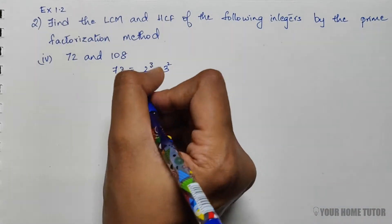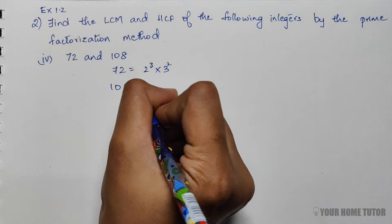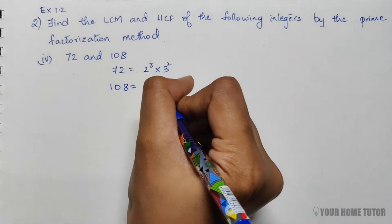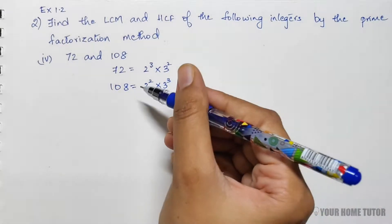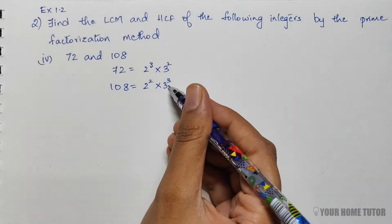For 108, the prime factors are 2² × 3³. That's 4 × 3³, which is 27. So 4 × 27 is 108.